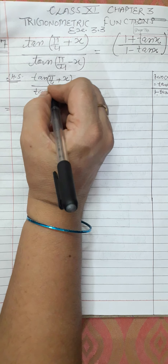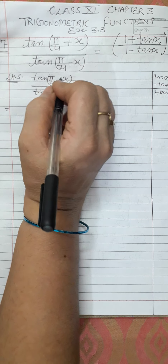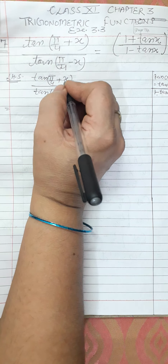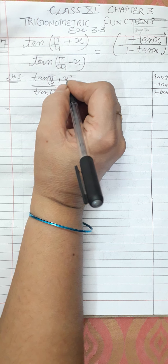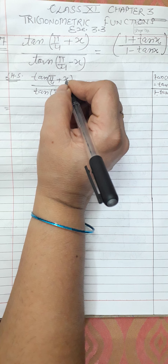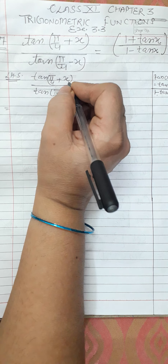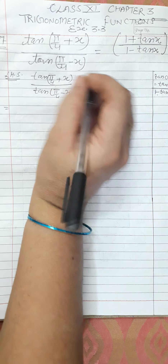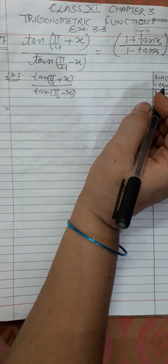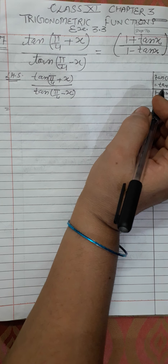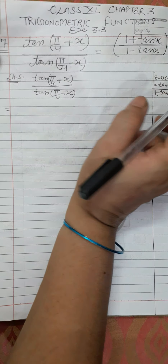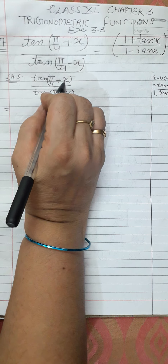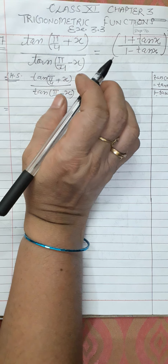Here, a = π/4 and b = x. Since x is given, we can use the identity in a + b form. That means tan(a + b) = (tan a + tan b) upon (1 − tan a · tan b). This is our identity.